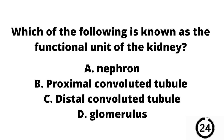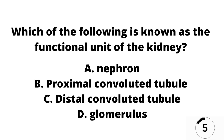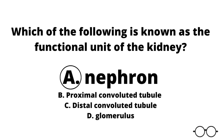Question number 10. Which of the following is known as the functional unit of the kidney? A the nephron, B the proximal convoluted tubule, C the distal convoluted tubule, or D the glomerulus? Our answer here is A — the nephron is the functional unit of the kidney.